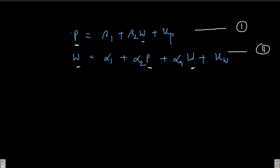These are the two equations, and we can see the reverse causality endogeneity problem clearly: in the first equation, wage rate w influences price rate p, whereas in the second equation, price rate p influences wage rate w. So quite clearly the reverse causality problem is present here.